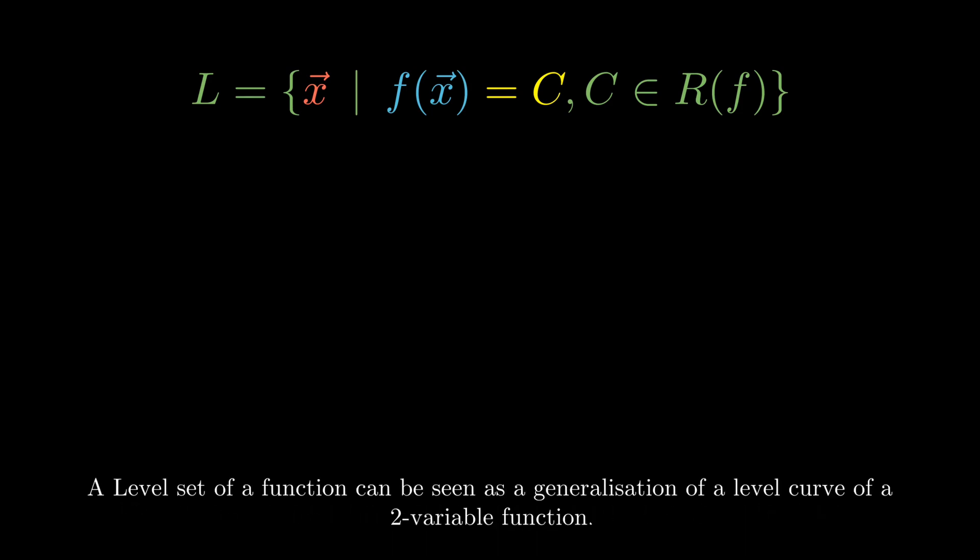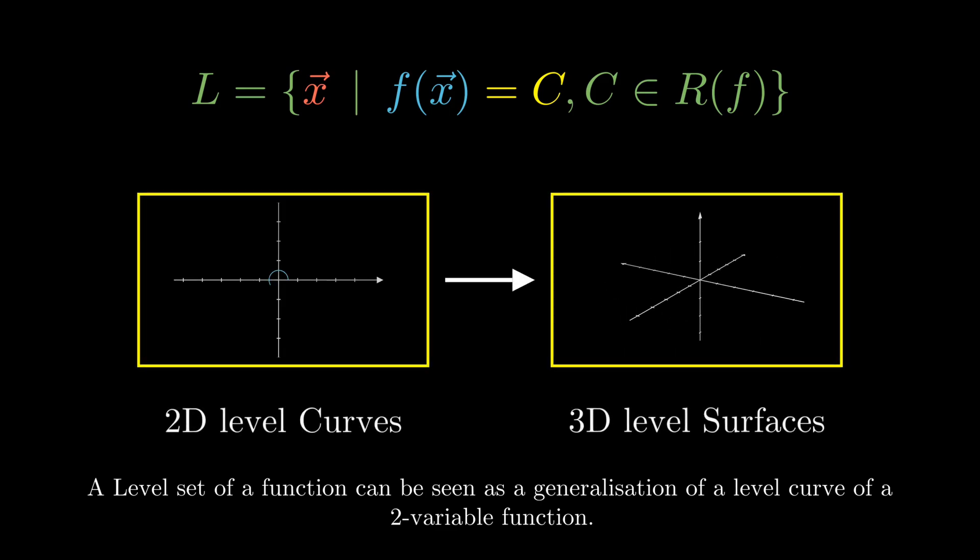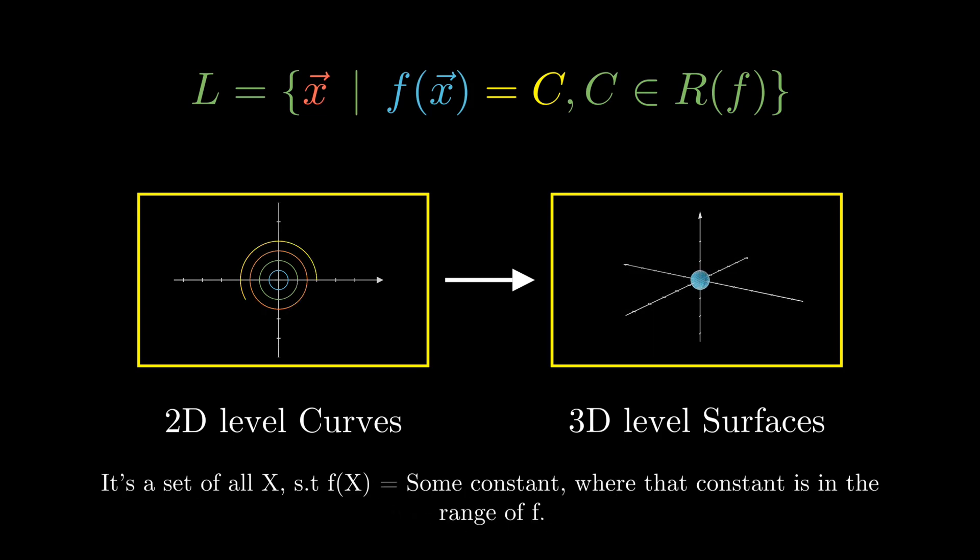The level set of a function can be seen as a generalization of a level curve. It's a set of all X such that f of X equals some constant, where that constant is in the range of f.